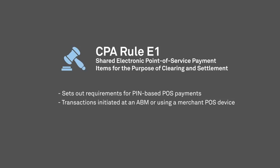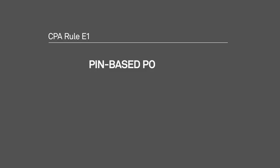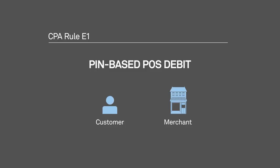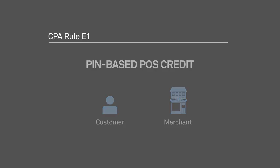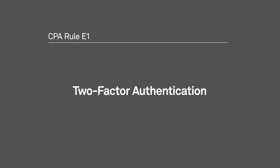Rule E-1 sets out the requirements for PIN-based POS payments. These transactions are initiated at a bank machine or using a merchant's POS device and can be either debits or credits. PIN-based POS debits are initiated by an individual to pay for goods or services or to obtain cash at an ABM, resulting in a debit to a cardholder's account. PIN-based POS credit transactions are initiated by a merchant to credit the cardholder's account in the case of purchase returns or refunds.